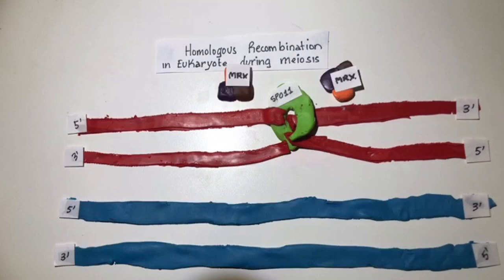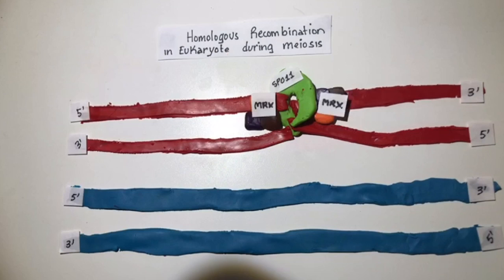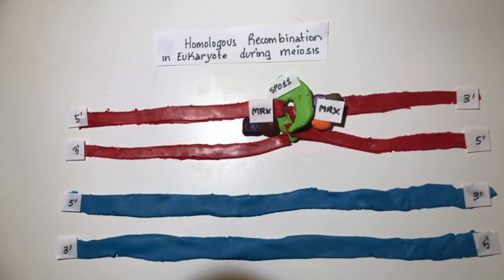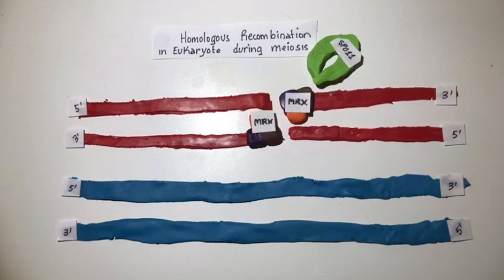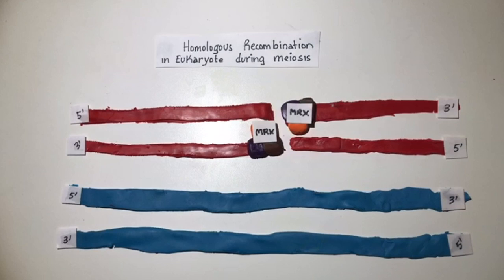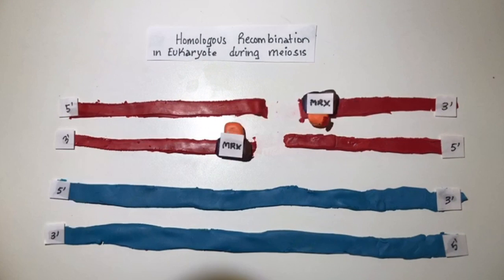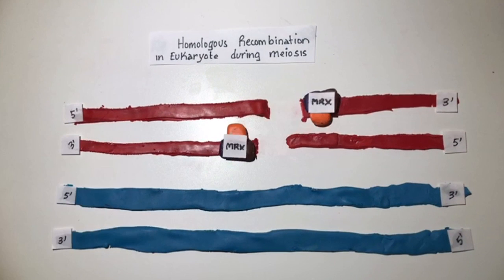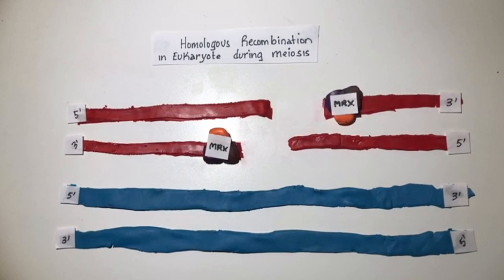After SPO11 introduces the double-stranded breaks, a 5' to 3' resection occurs by the MRX complex. The complex also removes the SPO11 protein. The complex is composed of proteins RAD50, MRE11, and SRS2.